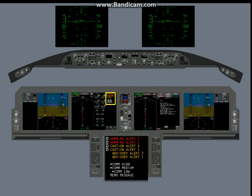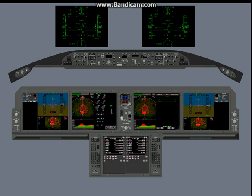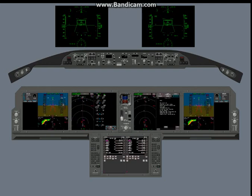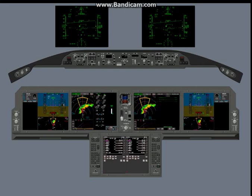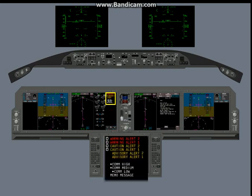The warning systems include the engine indication and crew alerting system, or ICAS. The ground proximity warning system, or GPWS. The traffic collision and avoidance system, or TCAS. And the predictive wind shear system, or PWS. This lesson will tell you about the ICAS functions of the crew alerting systems.